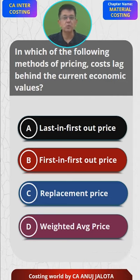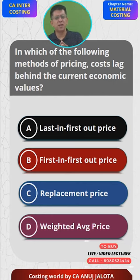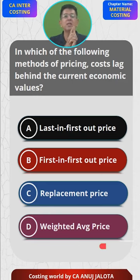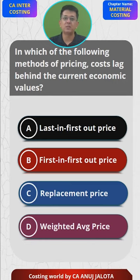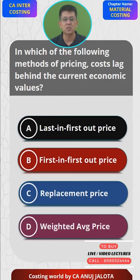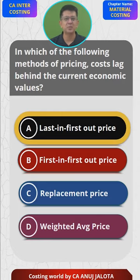Under weighted average price, it will be an average of all the prices, so the current price will also flow in automatically. But under the LIFO method, the stock that remains with us will be from the oldest lot, so it does not represent the current economic value. Therefore, A is the correct answer. See you all next time, bye.